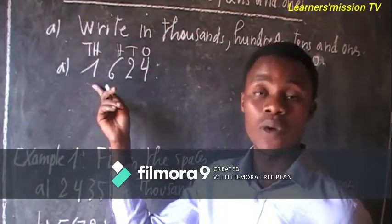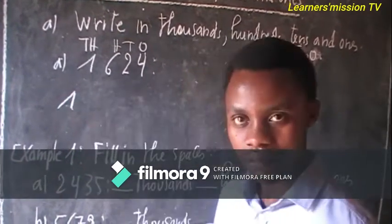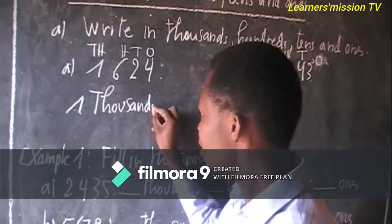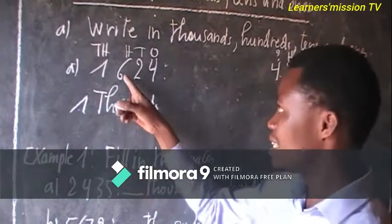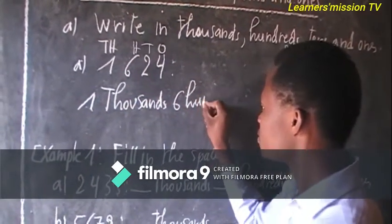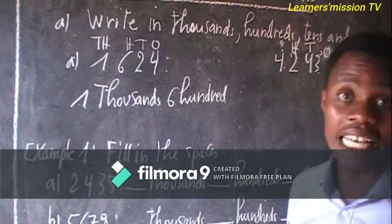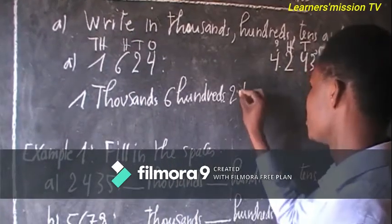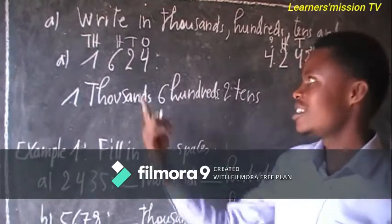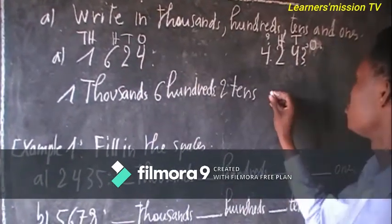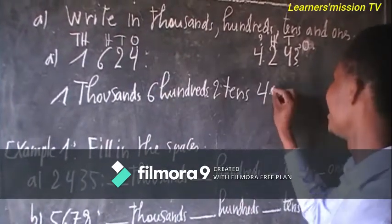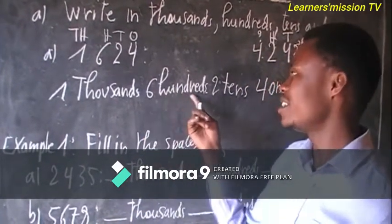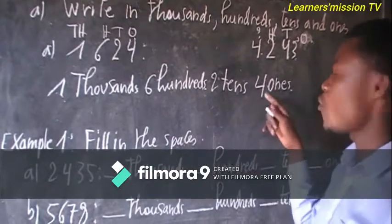This number is made of what? One thousands, one thousands, then six hundreds, six hundreds, and then we have four ones. This number is made of one thousands, six hundreds, two tens, and four ones.